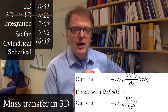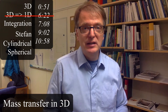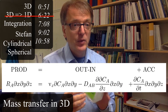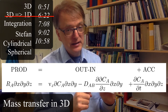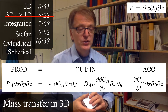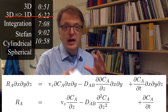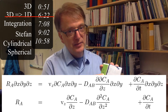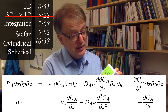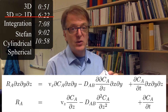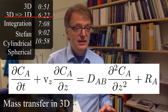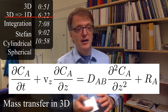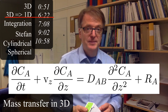For the reaction, we have a reaction rate Ra in moles per second per cubic meter, multiplied by the volume dx dy dz. After simplification — the Vz times CA terms cancel — the final equation is: Vz times dCA/dz plus dCA/dt (accumulation) equals diffusivity times d²CA/dz² plus Ra.